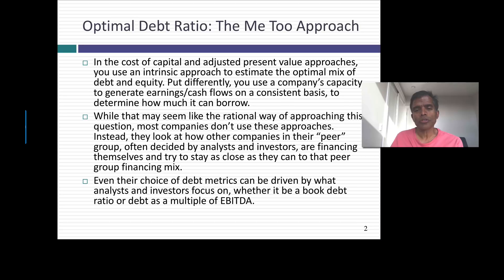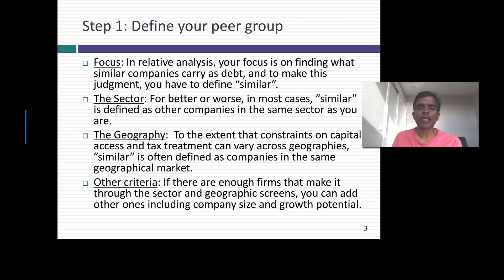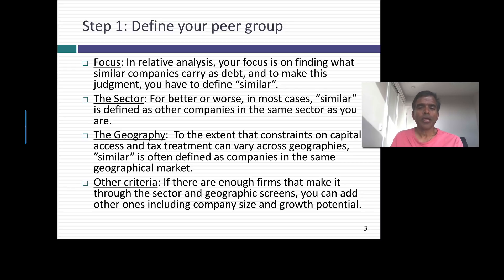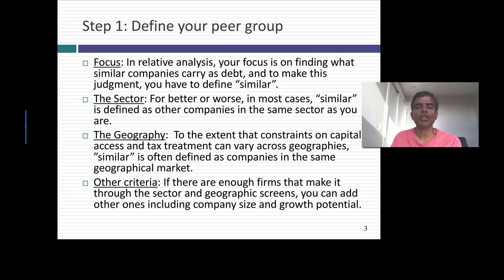With the me too approach, all of those rules we set up when we did the intrinsic approach can be put to the side. There are five steps in the me too approach. I'm going to use a company I've talked about before as my example — Amgen. Using the cost of capital approach, I concluded that Amgen had too little debt, that its optimal debt ratio was 50% and at a debt ratio of 21 to 22% it was under-levered. Let's see if that finding continues to hold when I compare Amgen to other companies in its peer group.